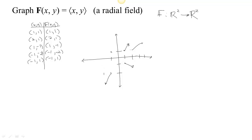At (-1, 1), right here, we have a vector that points out. Notice that the vector we have is always the same as the vector that would take you from the origin to that point, so that vector always points away from the origin. We always have the vector that would carry you from the origin to your location. So we have a vector field here that is radial, in the sense that it radiates out from the center.